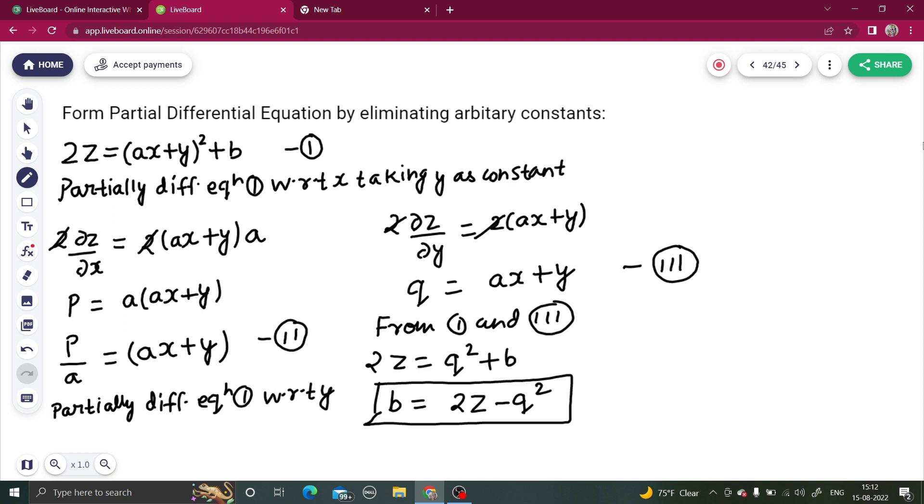If you see equation number two and three, from two and three, in equation number two if you put the value of ax plus y as q, you will get p by a equals to q, or a value you are getting as p by q.